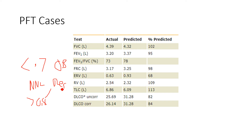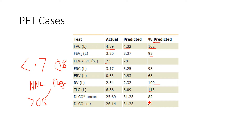So let's look at this patient. Their actual FEV1/FVC ratio is 73%, which is borderline low. Their FVC is 102% of predicted — pretty close to what they should be getting, so it's a pretty good test. FEV1 percent predicted is 95%. Residual volume is 109% of predicted. Total lung capacity is a little bit higher than normal, and DLCO is preserved.